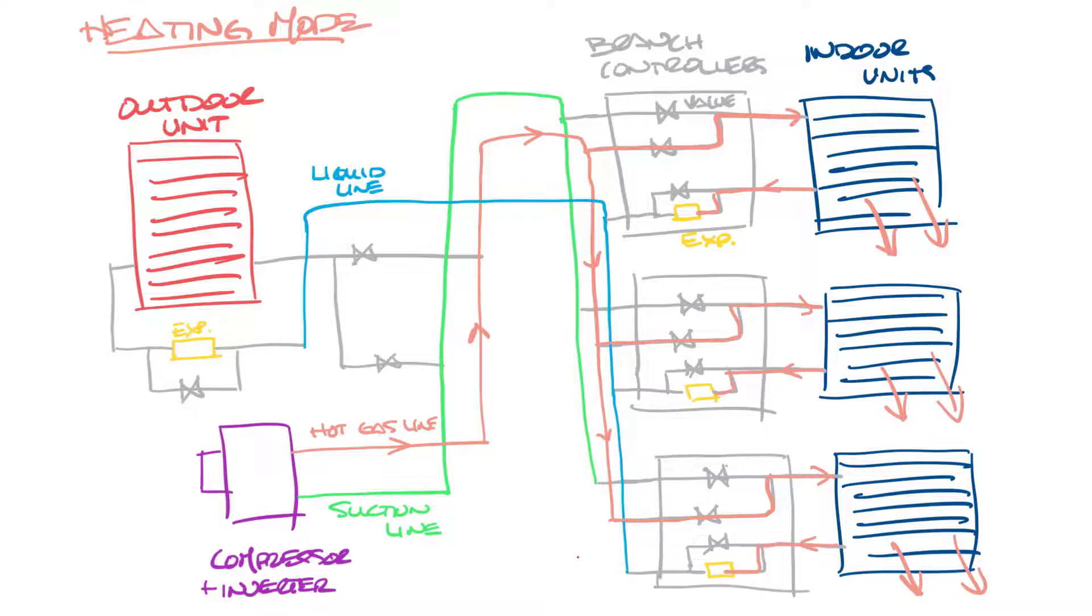From here it bypasses this expansion device because it's already cool and goes into the outdoor unit. Then when the refrigerant comes out of the outdoor unit it'll flow through and connect to the suction line and go back to the compressor. And then start the whole process again.